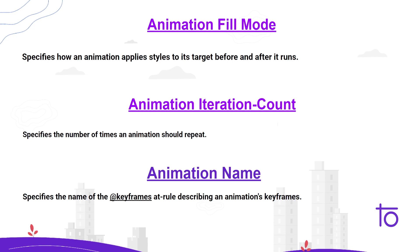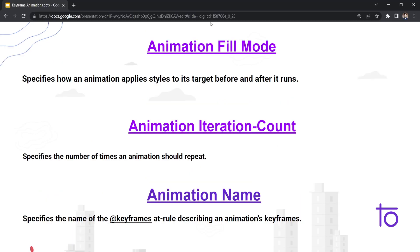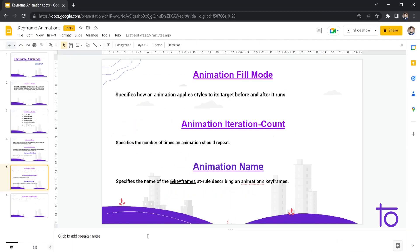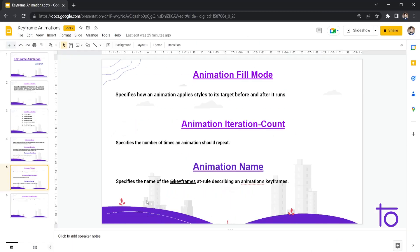Animation name is the name we need to give to any animation we want to apply. I'll show all of that with VS Code and live examples, so let's jump directly onto our HTML code.